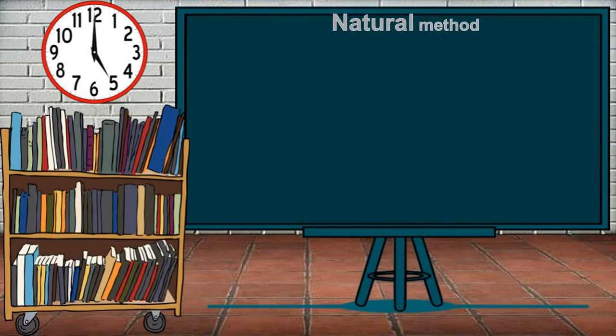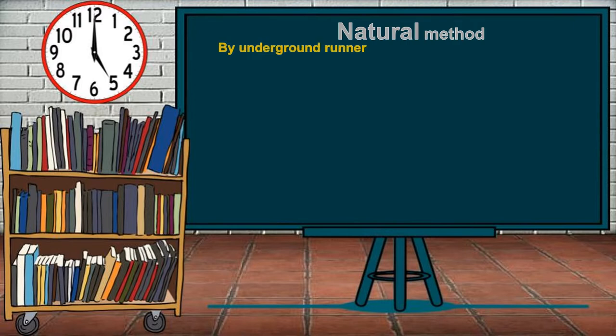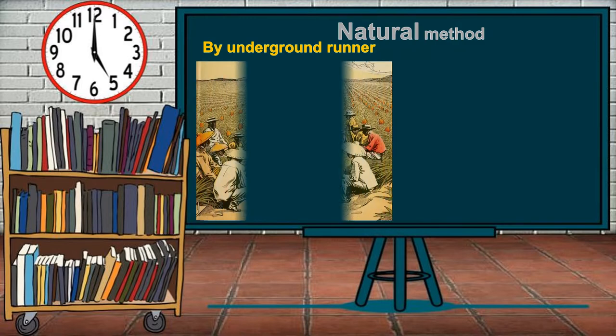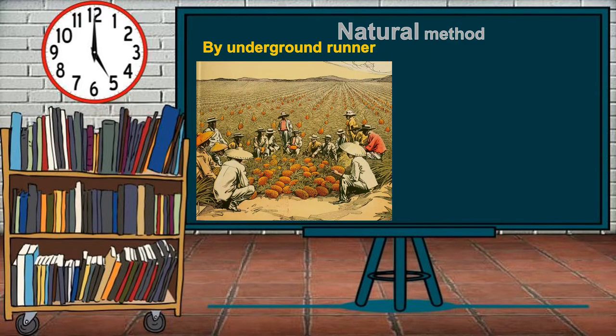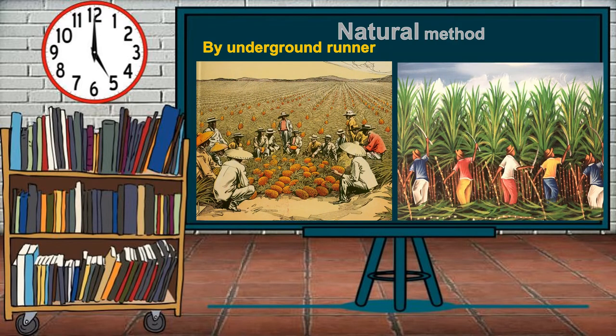The natural method of asexual reproduction multiplies plants naturally in different ways. The first is by underground runner, where a single parent plant can grow many new plants in one season. Examples include pineapple and sugar cane.